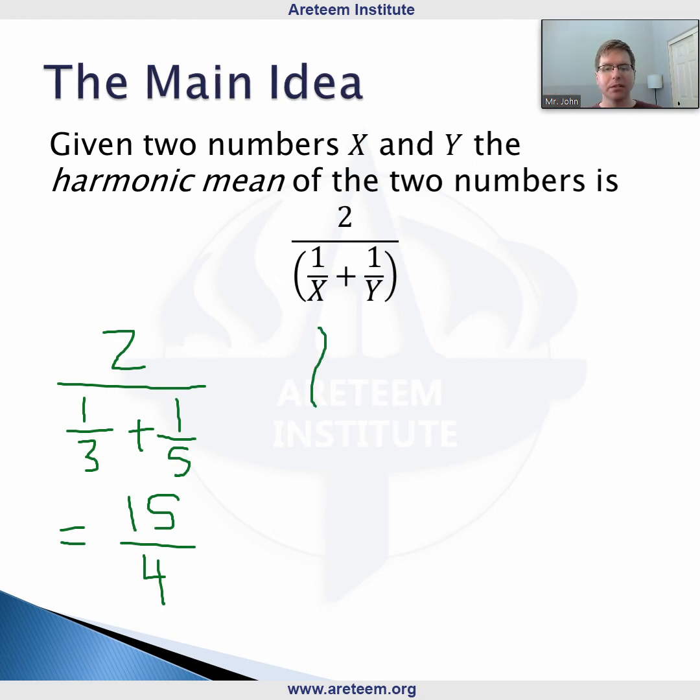Now we can do this with any two arbitrary numbers in a case like this. So let's just look at one other quick example here. What happens if x is 10 and y is 20? We know that the average, the regular mean, arithmetic mean of those two numbers is 15. But the harmonic mean is 2 divided by 1 tenth plus 1 twentieth.